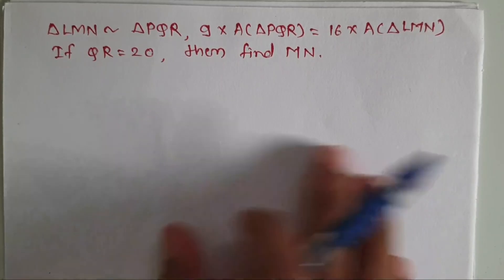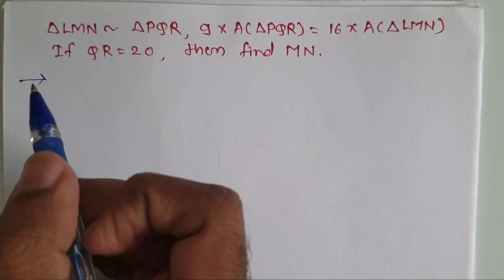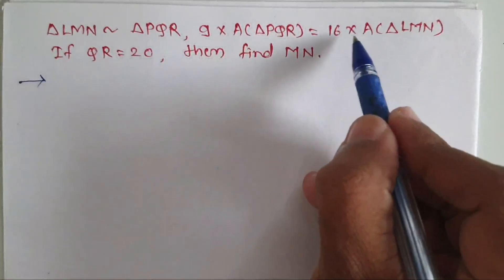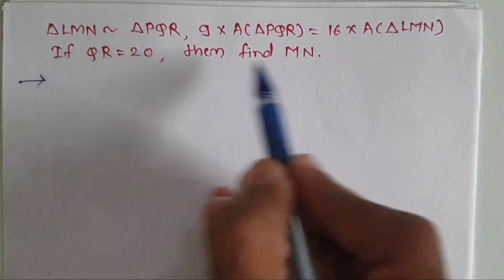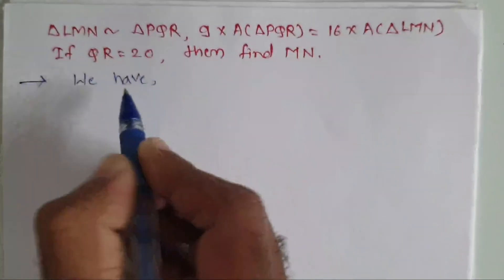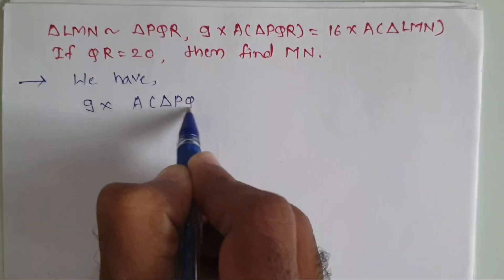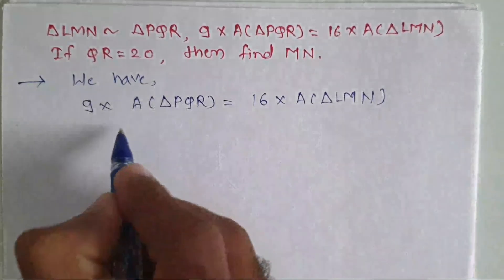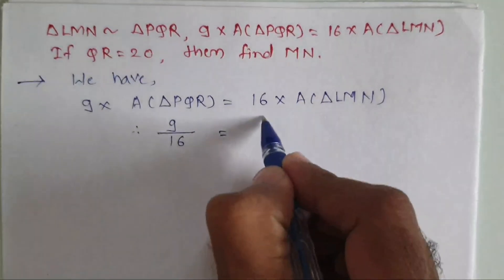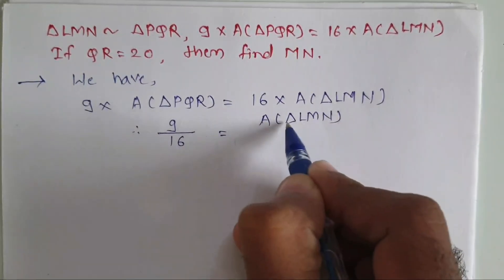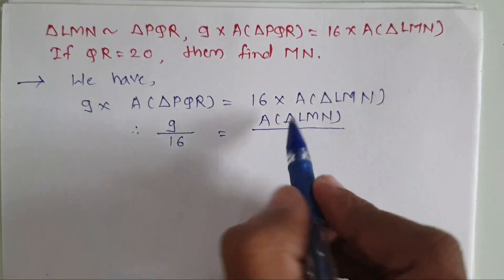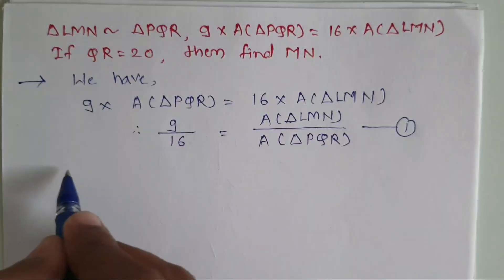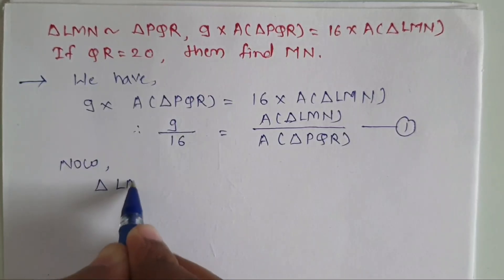Now we'll solve one example based on the theorem of areas of similar triangles. Triangle LMN is similar to triangle PQR, and 9 times area of triangle PQR equals 16 times area of triangle LMN. If QR is 20, we have to find MN. From the given condition, rearranging: area of triangle LMN divided by area of triangle PQR equals 9 by 16. We call this equation number 1.